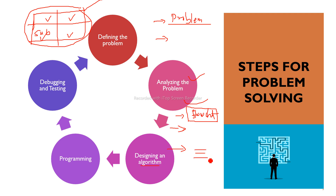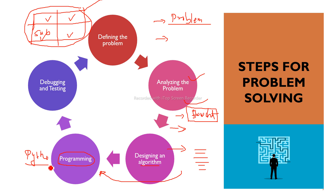Algorithm mein bhi hum various steps likhte hain — step 1, step 2, step 3, step 4, step 5 — aur uske baad algorithm karne ke baad that will bring us closer to the programming. Ab is stage mein jaake hum actually Python ki, ya Java ki, ya C# ki — kisi bhi level par actually programming karte hain. So this is a general overview idea for every programming. Yahan jaake humne Python ka code likhna start kar diya — directly to nahi likhenge, for that you need to understand Python's different sections — data structures, functions, etc.